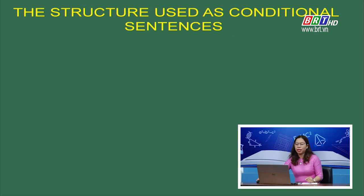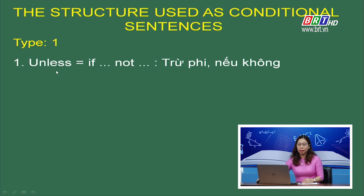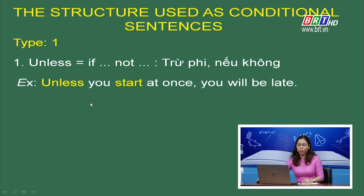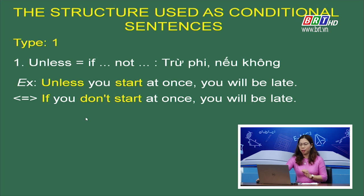Ngoài công thức chính và những cách sử dụng trong câu điều kiện loại 1 và loại 2, còn có cách sử dụng khác — đó là dùng unless thay cho if not. Unless có nghĩa là trừ phi; if not là nếu không. Ví dụ: Unless you start at once, you will be late — tương đương với: If you don't start at once, you will be late. Về nghĩa 2 câu này hoàn toàn giống nhau. Tuy nhiên, unless đứng trước một mệnh đề khẳng định, còn if not đứng trước một mệnh đề phủ định. Các em ghi chú điều đặc biệt này vào vở.